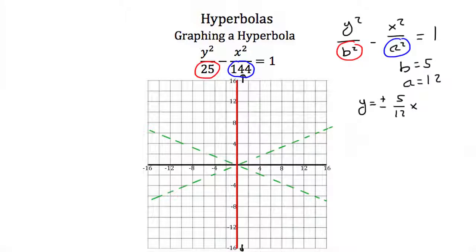Our vertices are a distance of b units, so 5 units, away from the center. Our foci are a distance of c units away, but we haven't found c yet. Using c squared equals a squared plus b squared, we get c squared equals 12 squared plus 5 squared.